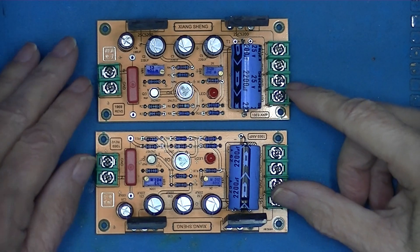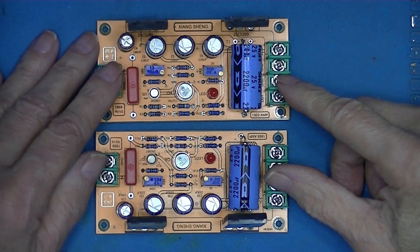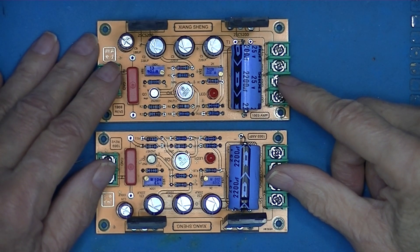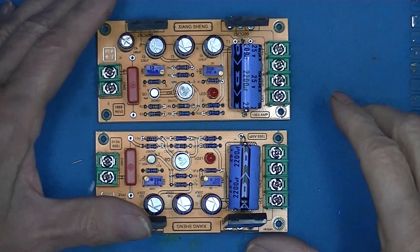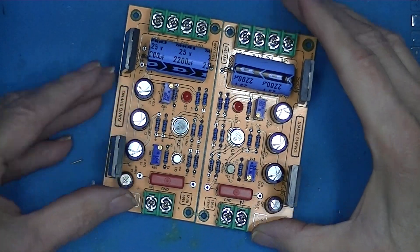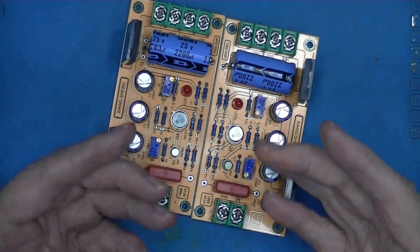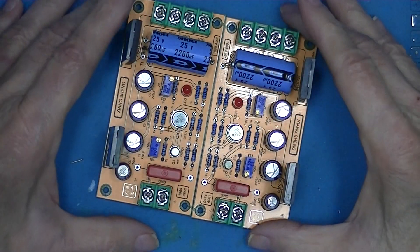I have a pair of JLH 69 style class A amplifiers here. They are left and right, or mirror images of each other. As you can see, everything's duplicated but mirrored.